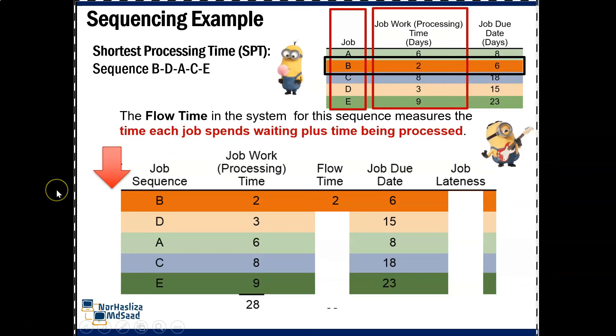The next part is to find the flow time. The flow time in the system for this sequence measures the time each job spends waiting plus time being processed.